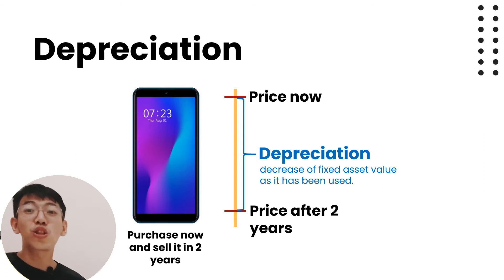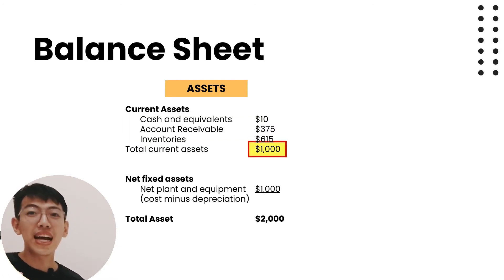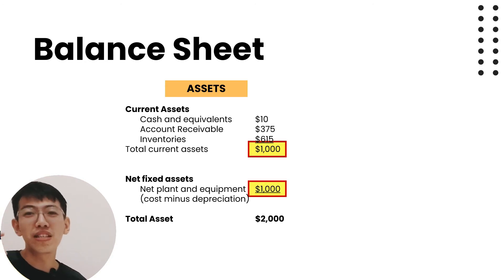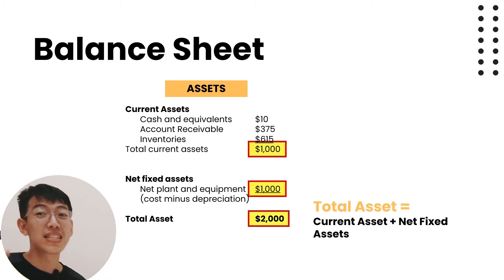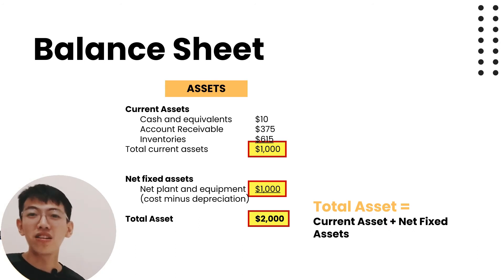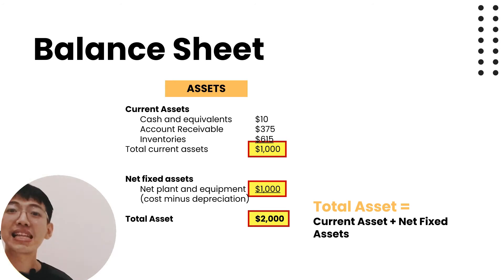In this example, total current assets is the sum of cash, accounts receivable, and inventory, which equals one thousand dollars. The fixed asset is one thousand dollars — this is already net because it has been deducted by depreciation. Total assets equals current assets plus net fixed assets: one thousand dollars plus one thousand dollars equals two thousand dollars.